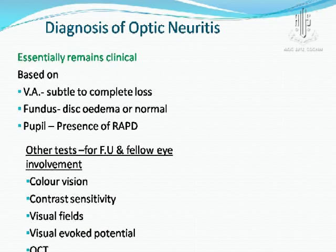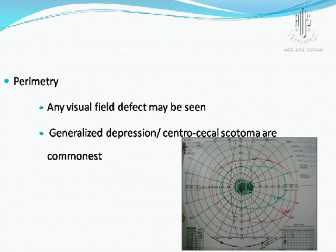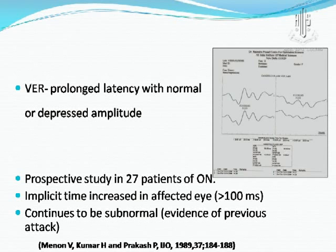The diagnosis is basically clinical, based on visual loss, the fundus picture, and pupillary responses. Other tests are useful not for diagnosing optic neuritis per se, but for follow-up and detecting fellow eye involvement. Field charting may show effects ranging from central cecocentral scotomas to any kind of field defect. VEP shows increased latency and depressed amplitude, and is more important for follow-up.